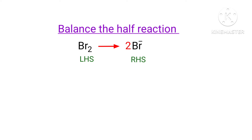For a redox reaction, the addition of charges should be equal on both sides. As per assigning oxidation numbers, the oxidation number of a monoatomic ion is equal to the charge of the ion, and the oxidation number of a free element is equal to zero. So the left hand side, the addition of charges is zero, and the right hand side, the addition of charges is two times minus one, which equals minus two.